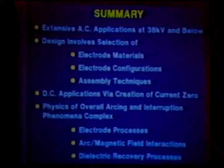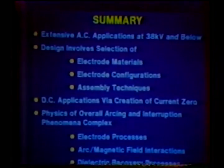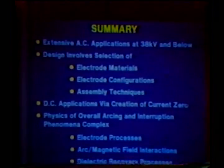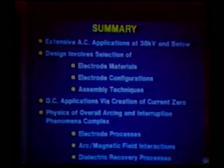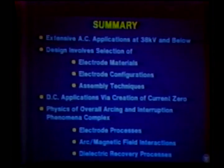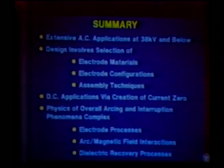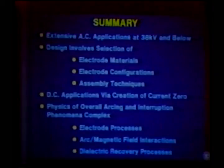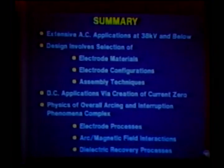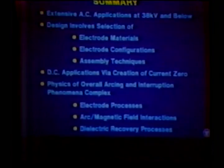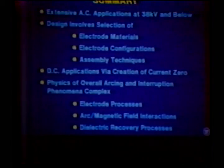In summary, for vacuum switching devices — the type of device to which much of the research heard about in the last couple of days is applicable — such devices are receiving extensive AC applications at 38 kV and below. The design involves careful selection of electrical materials, electrical configurations, and assembly and processing techniques. You can have such switching devices in AC and DC applications via the creation of a current zero. The physics of the overall arcing and interruption phenomena are quite complex, as they involve an understanding of electrical processes, magnetic field interactions, and dielectric recovery processes.